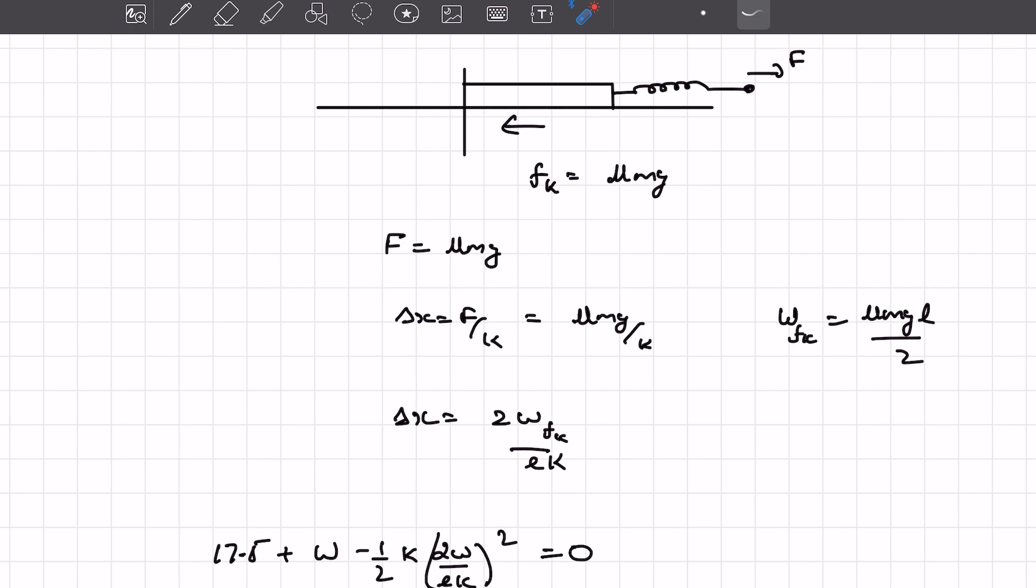Now earlier we determined the magnitude of work done by friction to be mu mg L by 2. So we can write delta X in terms of the work done by friction. I'm doing this because we don't know about mu and M.